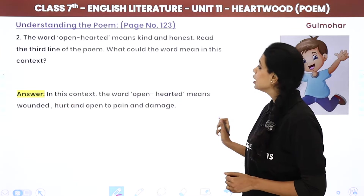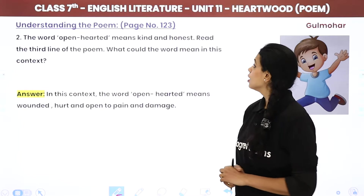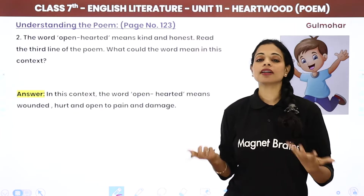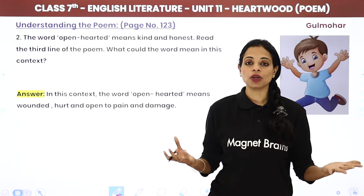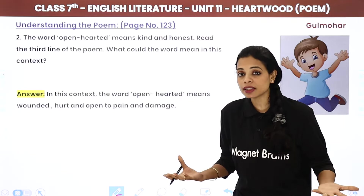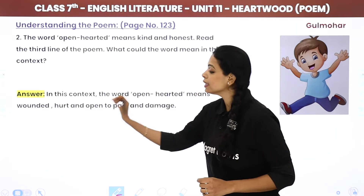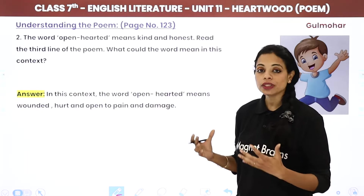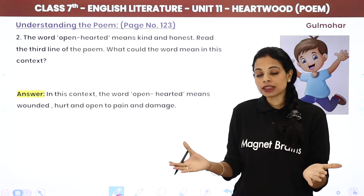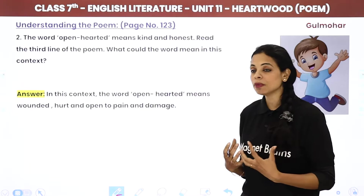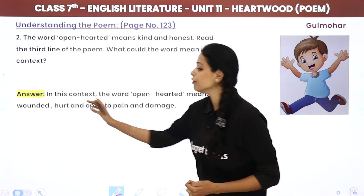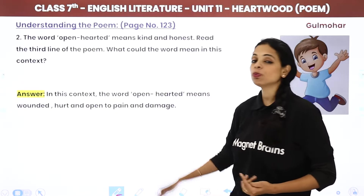The next question: the word 'open-hearted' means kind and honest. Read the third line of the poem — what could the word mean in this context? Usually 'open-hearted' means someone who is generous and kind. But in the third line of the poem, the tree asks: 'Will you leave me open-hearted?' In this context, the word 'open-hearted' means wounded, hurt, and open to pain and damage.